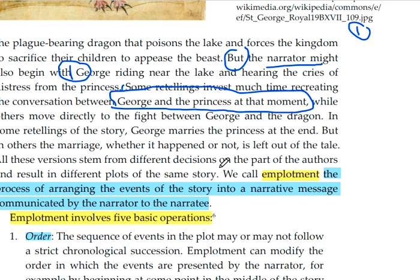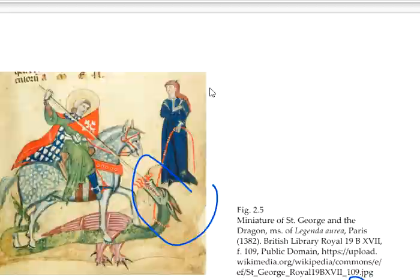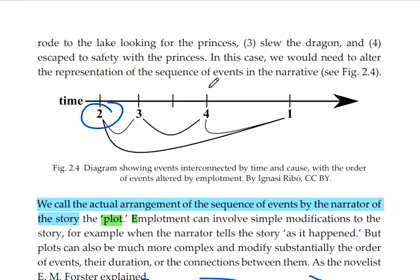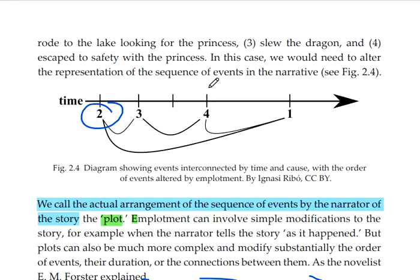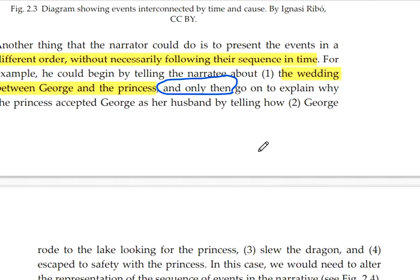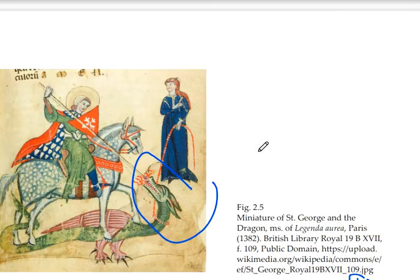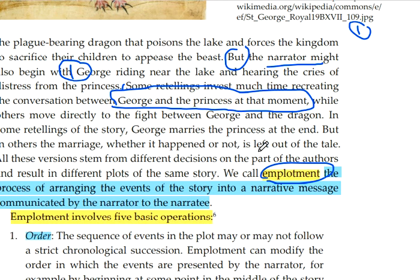Emplotment is the process of arranging the events of the story into a narrative message communicated by the narrator. The narrator has a variety of versions of narration available — using curved lines meaning he may not start with event one, and using causal connections between events — giving him flexibility to focus on specific events or specific characters.